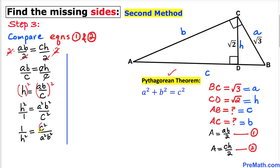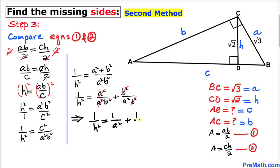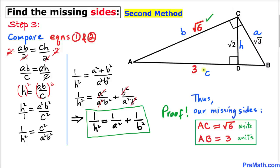Now recalling the Pythagorean theorem, a squared plus b squared equals c squared, we replace c squared with a squared plus b squared. So 1 over h squared equals a squared plus b squared, all divided by a squared times b squared. Splitting the right-hand side: a squared over a squared b squared plus b squared over a squared b squared. The a squareds cancel and b squareds cancel, giving us 1 over h squared equals 1 over b squared plus 1 over a squared — and that's our proof. So our missing sides are square root of 6 and 3. Thanks for watching and please subscribe to my channel for more exciting videos!